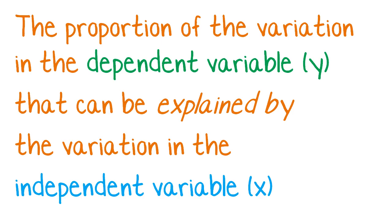What the r squared value tells us is the proportion of the variation in the dependent variable that can be explained by the variation in the independent variable.